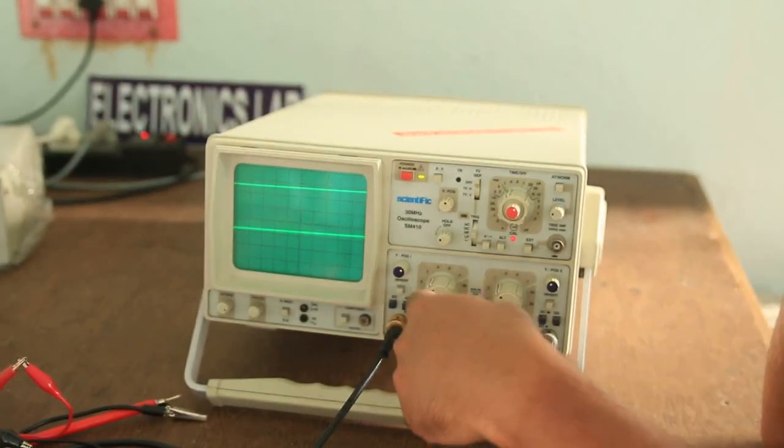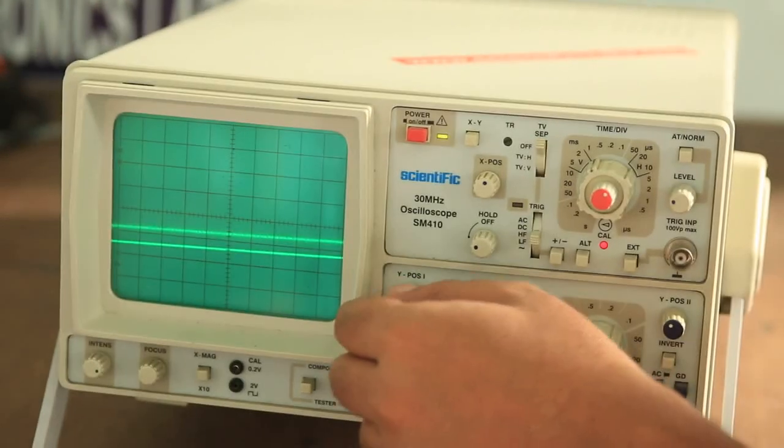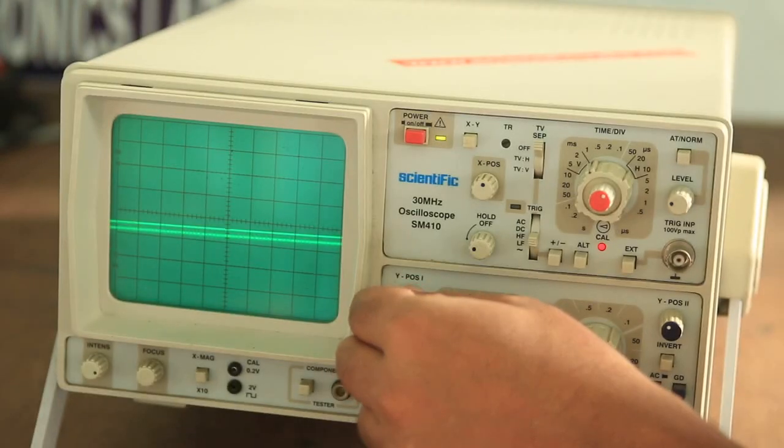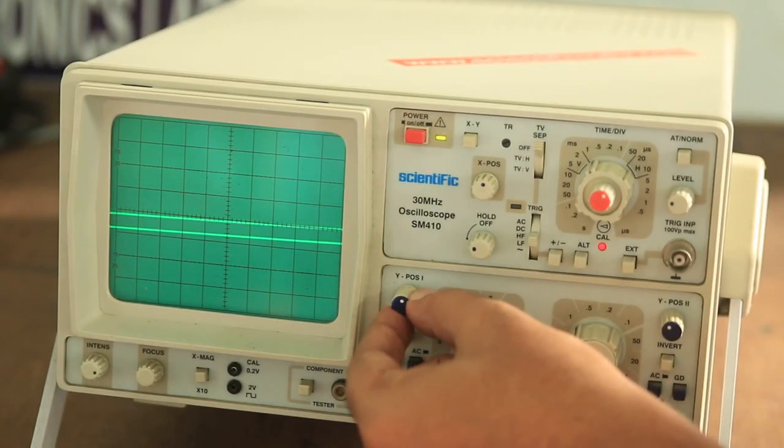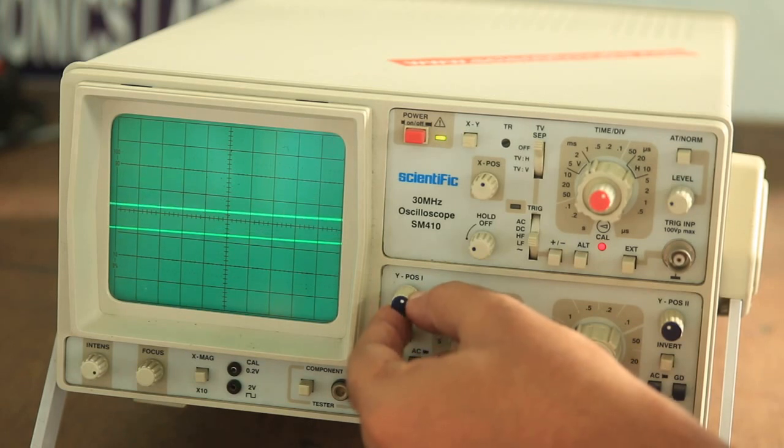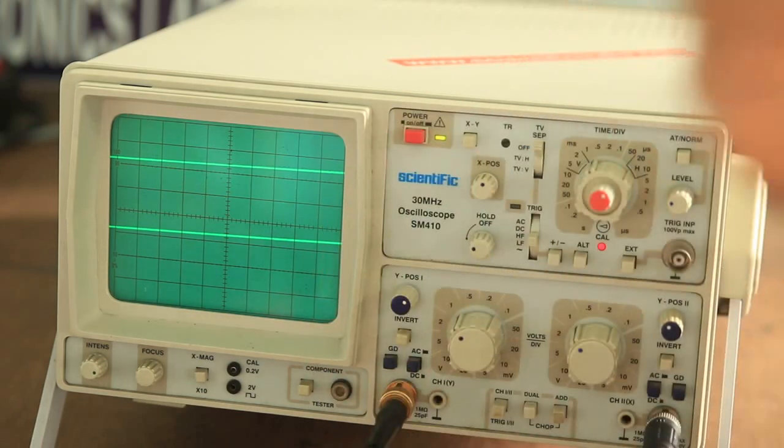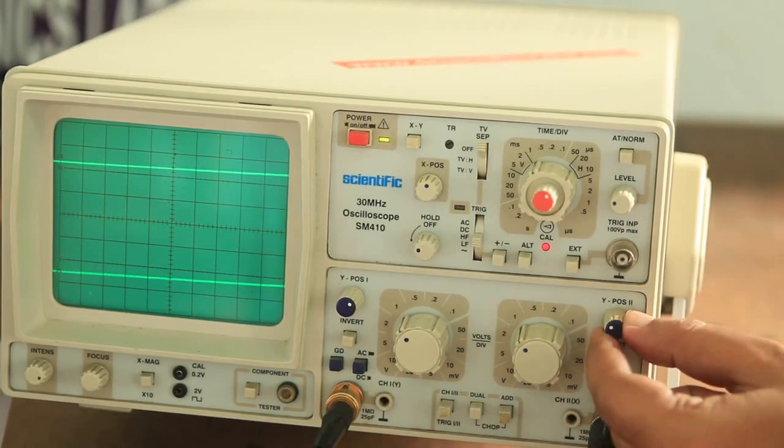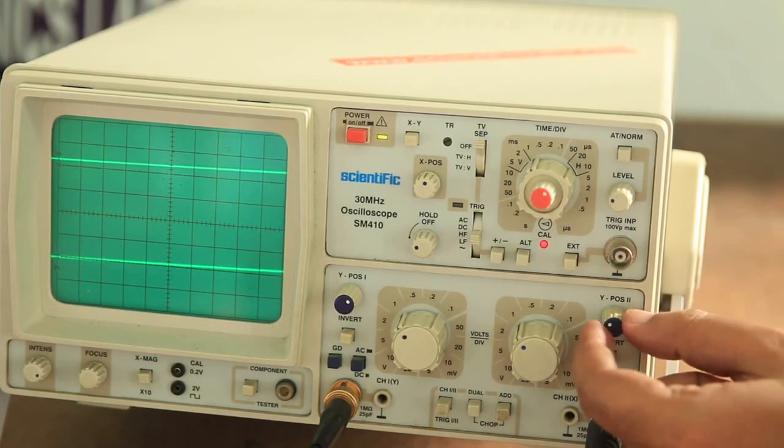This small knob indicates the Y position, means the vertical position of the channel 1. As you can see, if I move this knob, the line, one line automatically goes up and down. That means the vertical direction is reflected on this. Similarly, for the case of channel 2, as you can see, the second line is now going up and down. So we can display it vertically by this knob.